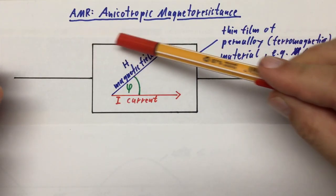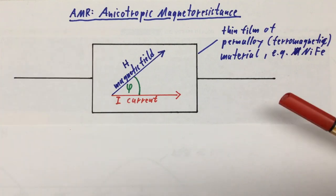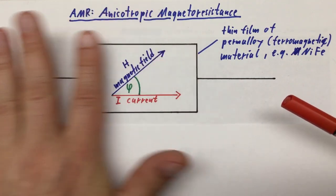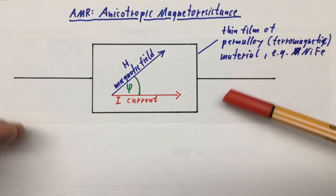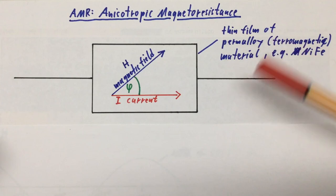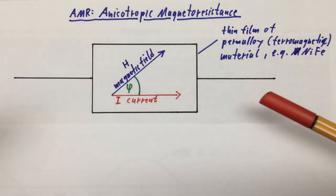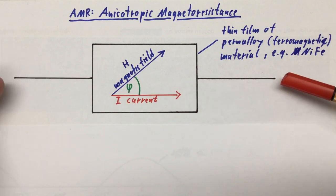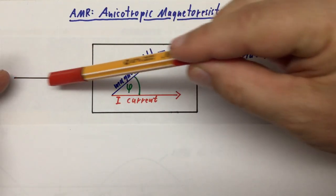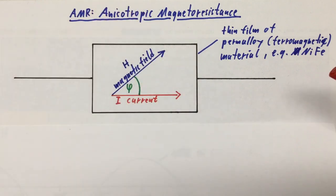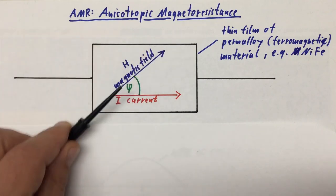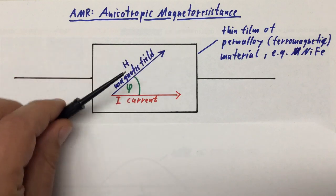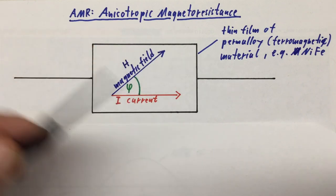So what is an anisotropic magnetoresistive sensor? To observe anisotropic magnetoresistance or AMR, you first need a very thin film of a perm alloy or a ferromagnetic material like, for example, nickel iron. That is a material that can permanently be magnetized and that can conduct electricity. Next, you need to send a current through your very thin film here and measure its resistance.